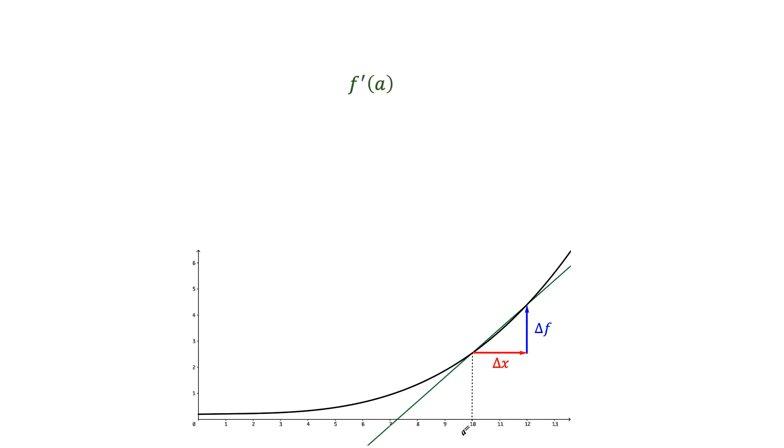However, since the graph isn't a straight line, this slope is only an approximation of the value of the derivative. But we can get a better approximation if we use smaller values of delta x.